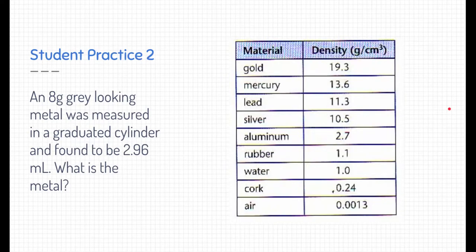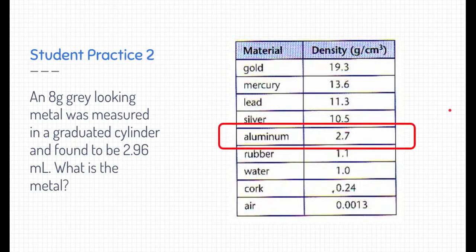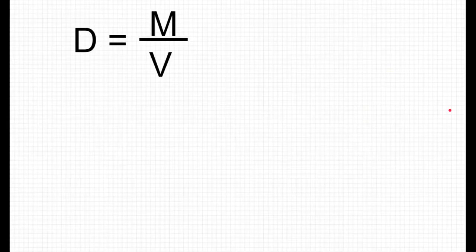Did you figure it out? Well, if you figured out that the density of the metal was 2.7 grams per centimeters cubed, then you probably figured out that the metal is aluminum. And we did that just by taking eight grams, dividing it by 2.96 milliliters.